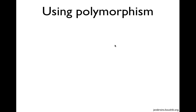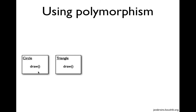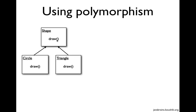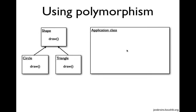Let me show you how I would modify the code to implement polymorphism. I have a circle object and a triangle object, both with a similar draw method. What I'll do is have a shape interface or shape parent class that has a draw method, and I'll make both the circle and the triangle inherit from this shape interface or parent class. The circle is going to override the draw method of shape, and the triangle is going to override the draw method of shape. In my application class, instead of initiating a triangle, I would say shape equals new triangle.